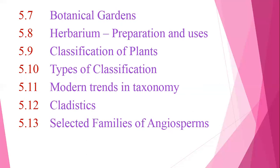We will also study Herbarium — its preparation and uses, how plant specimens are preserved in a particular place, and what the indices of herbarium are. Further topics include Classification of Plants, Types of Classification, Modern Trends in Taxonomy — what developments have occurred in modern taxonomy — and the last topic: Selected Families of Angiosperms, where some example angiosperm families will be studied.